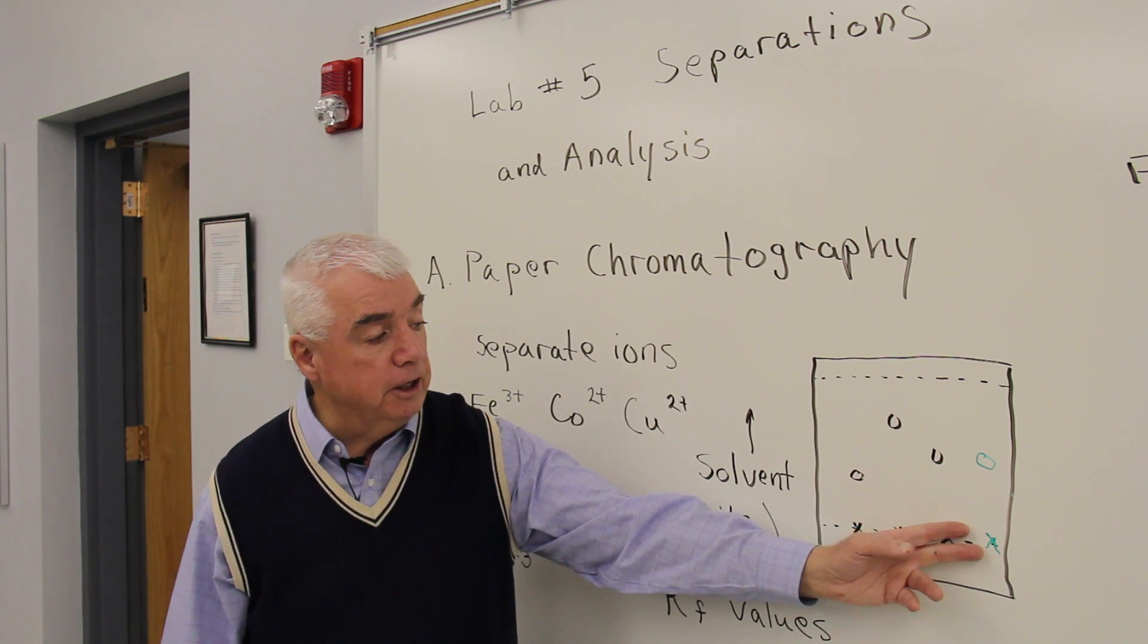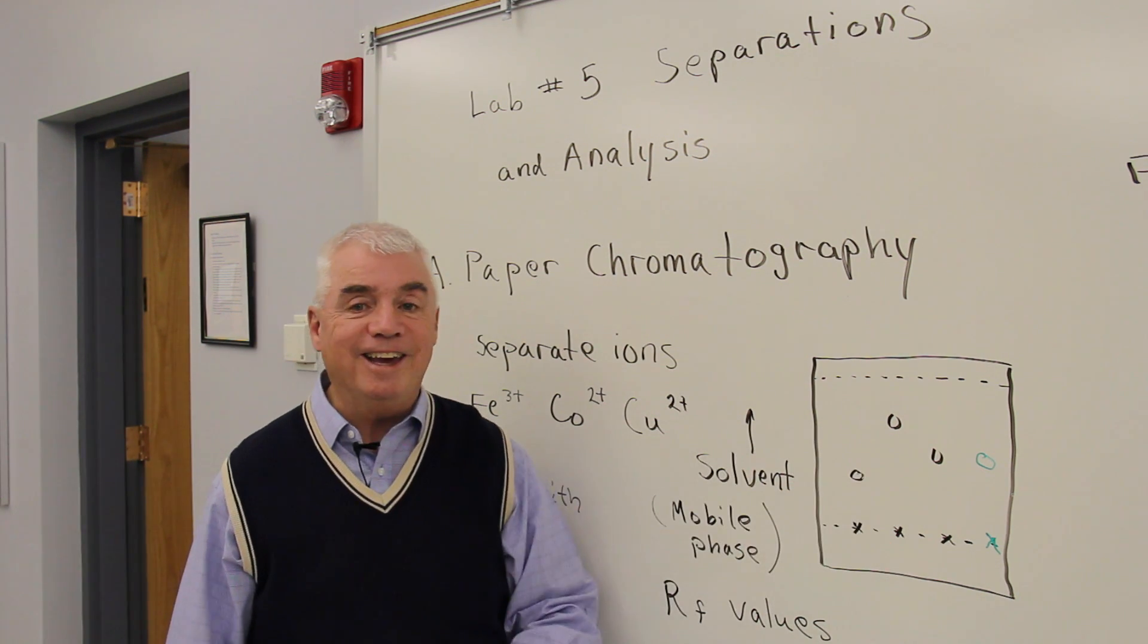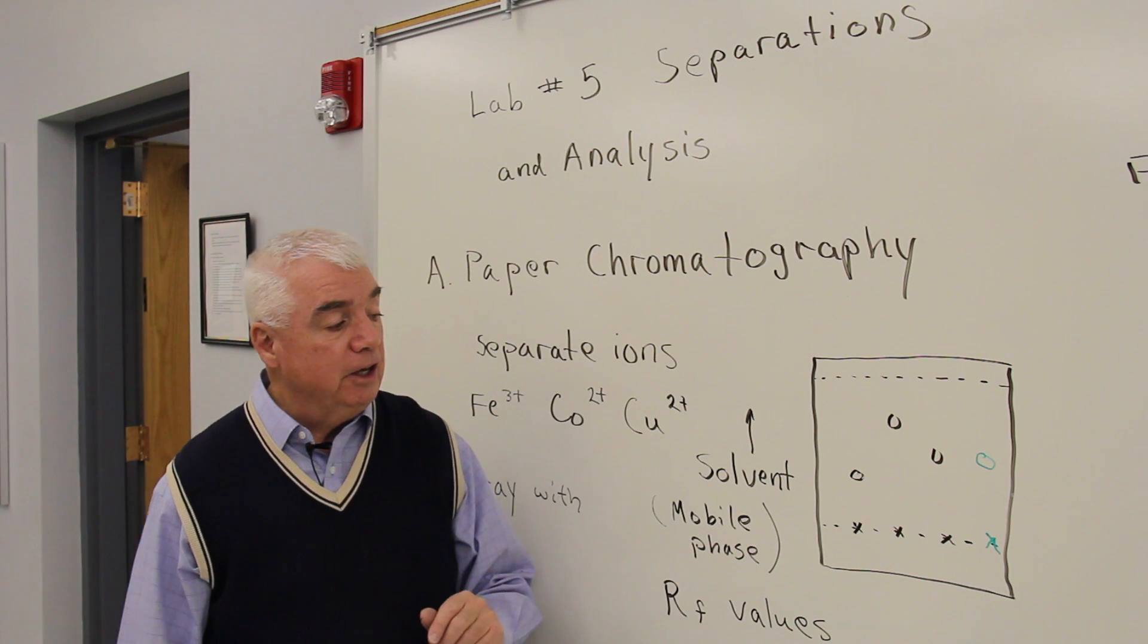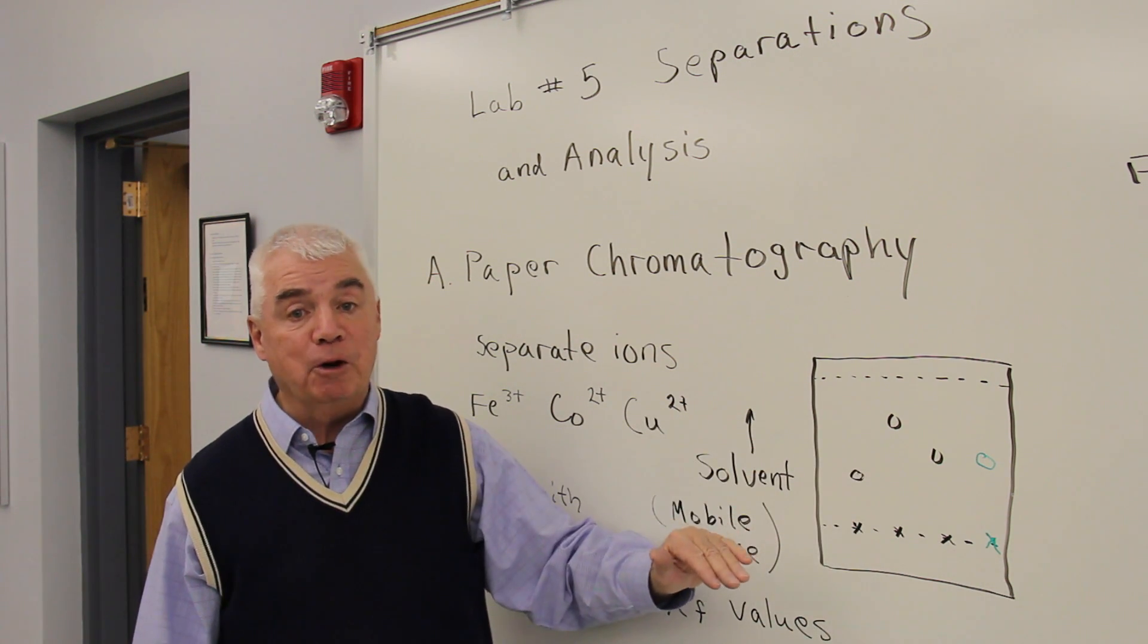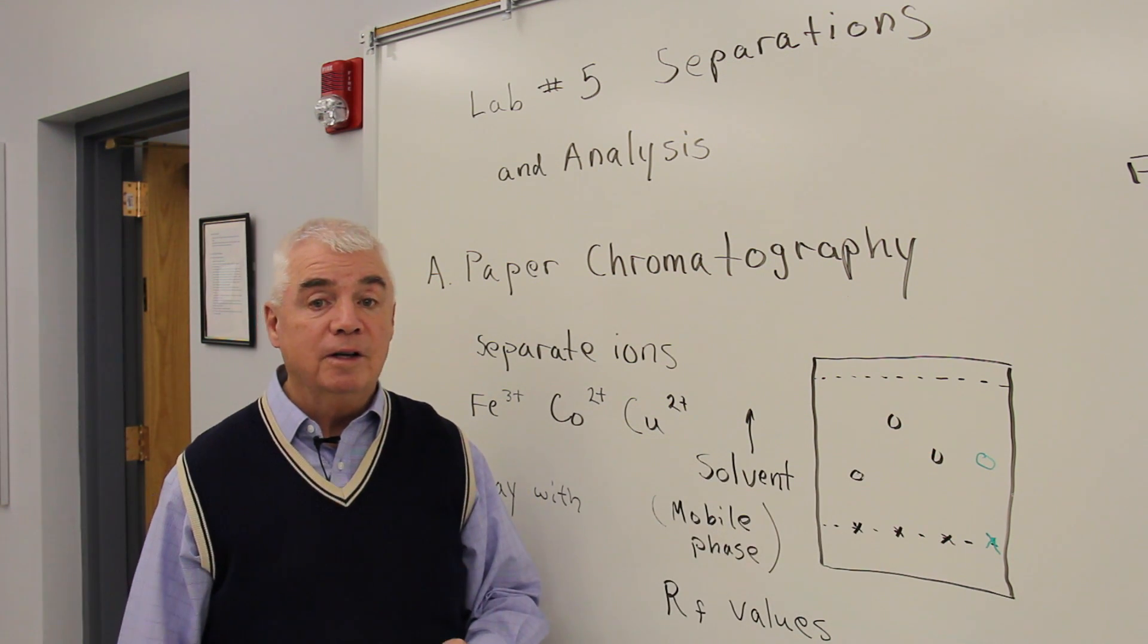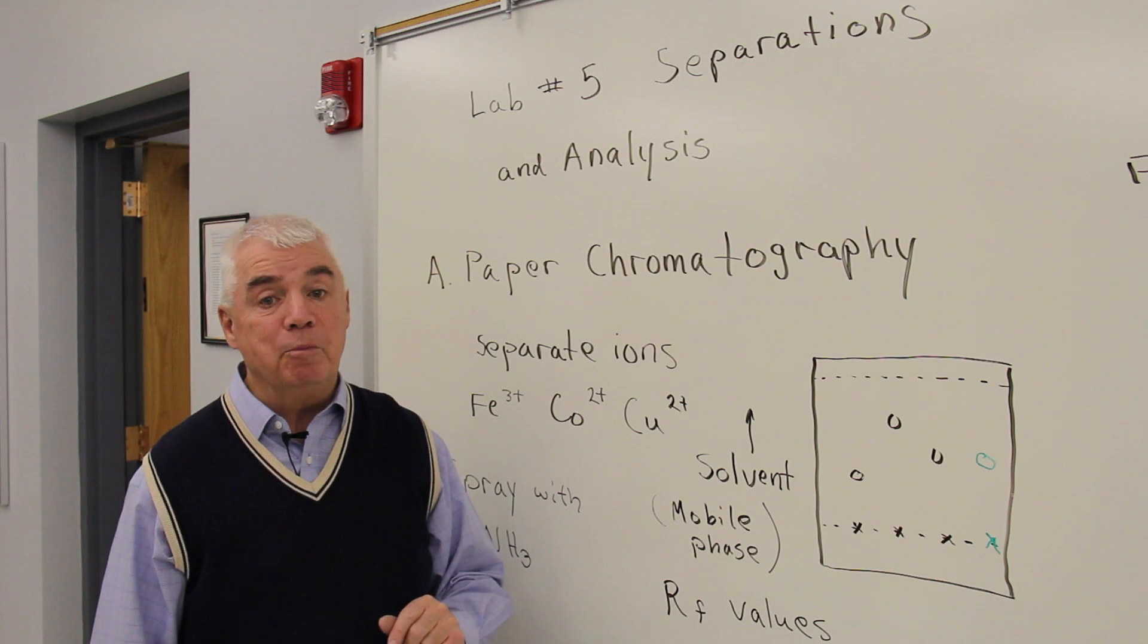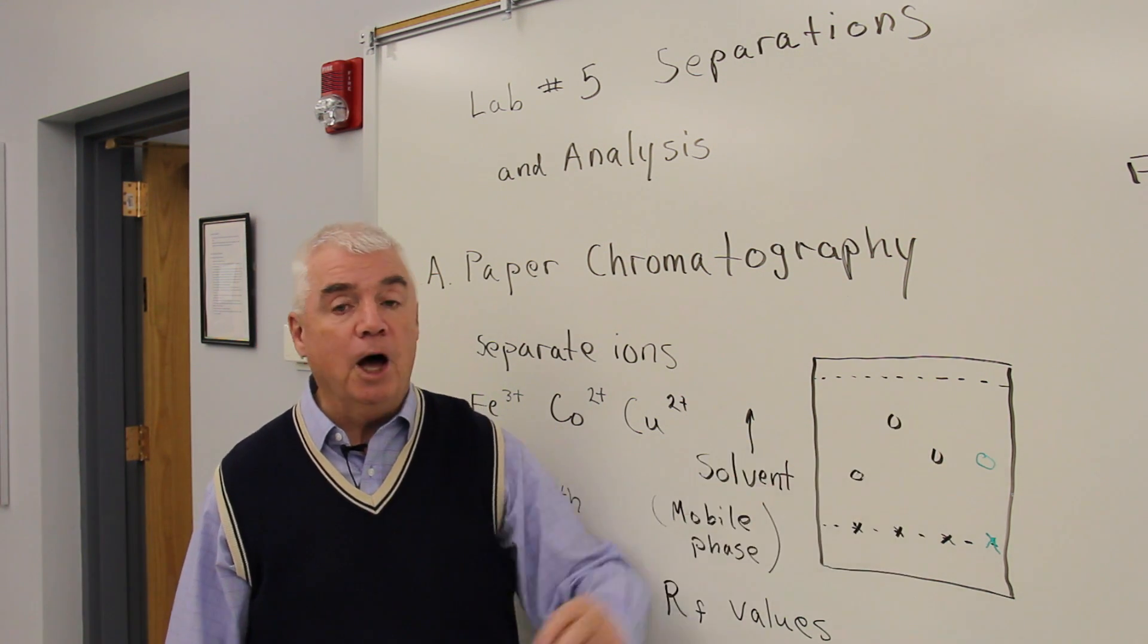And if we also spotted an unknown that maybe would contain one, two, or three of these ions, you can use comparative distances of migration to identify the components in the unknown. The very first thing you would see is how many components are in the unknown by the number of spots.